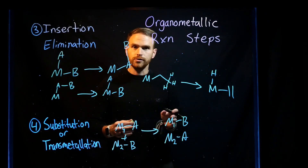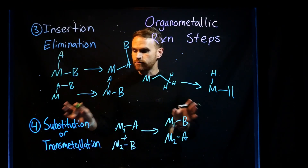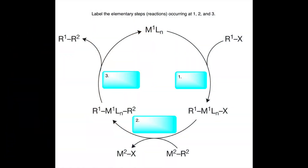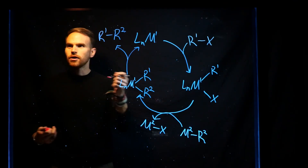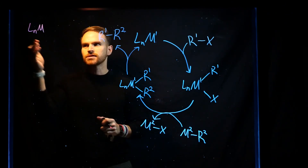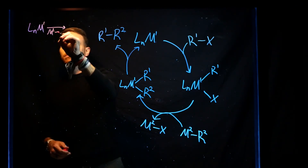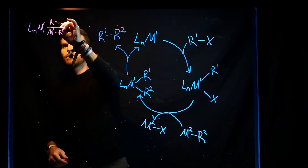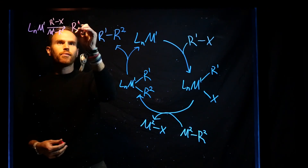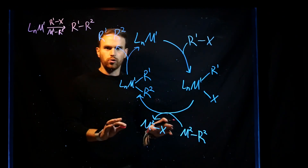I'm going to present a few catalytic cycles and ask you to identify, in the boxes, which reaction classes or elementary steps correspond to those taking place. For this transformation, the overall reaction involves a metal supported by ligands — L subscript N indicates some number of ligands on the metal — reacting with a second metal bearing an R-group and an R-group with a halide (X). Overall, this is generating a brand new carbon-carbon bond, occurring via three fundamental elementary steps.